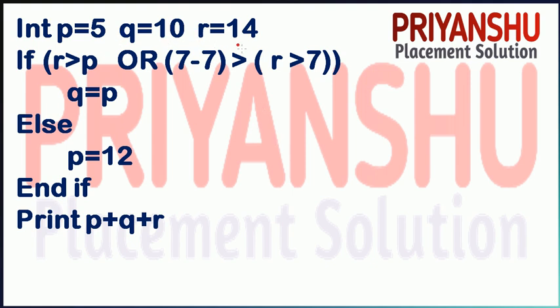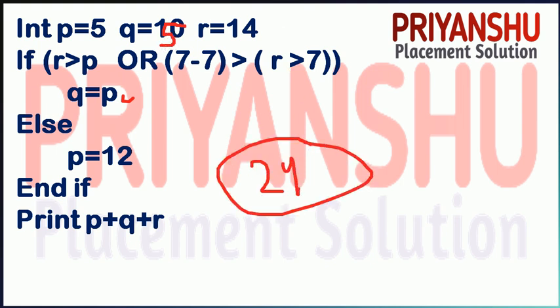Next question: P equals 5, Q equals 10, R equals 14. After this video we will discuss programming questions, so keep watching the series. Now: is R greater than P? 14 greater than 5 — yes. So Q equals P, meaning Q becomes 5. Print: 5, 5, and 14 — so 5 plus 5 plus 14 equals 24 is the answer.